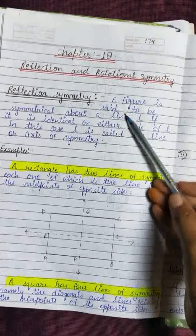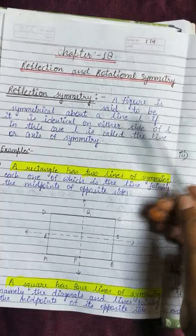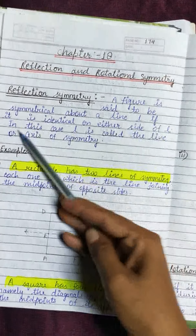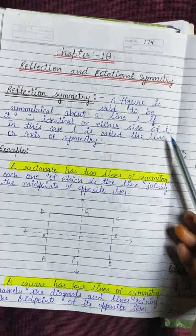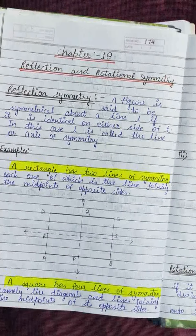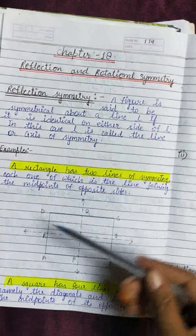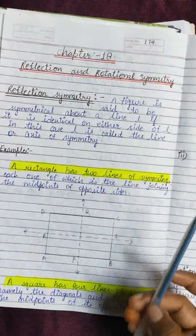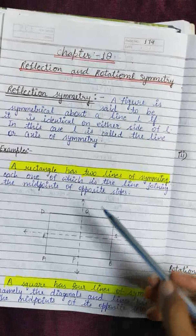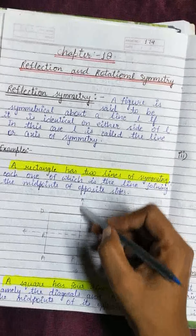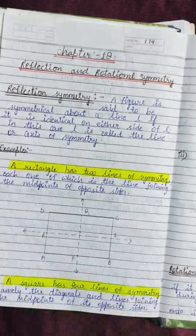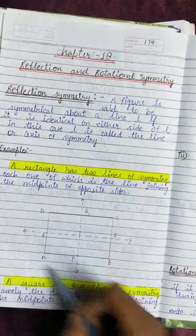Reflection symmetry: a figure is said to be symmetrical about a line L if it is identical on either side of L. In this case, L is called the line or axis of symmetry. Any figure is called symmetrical when the figure formed on both sides of its line of symmetry is equal.